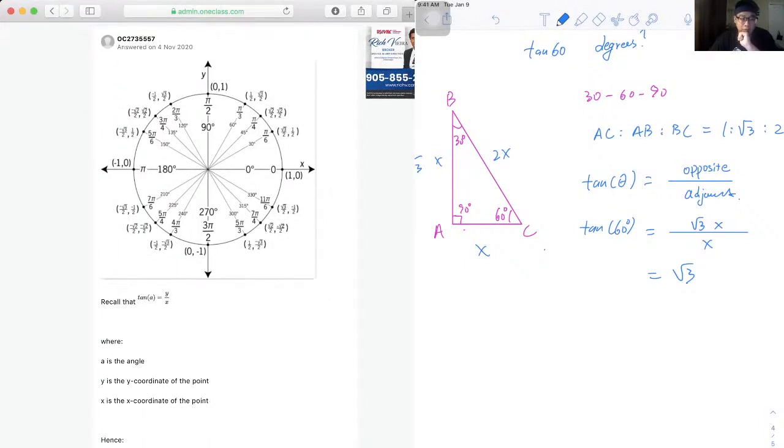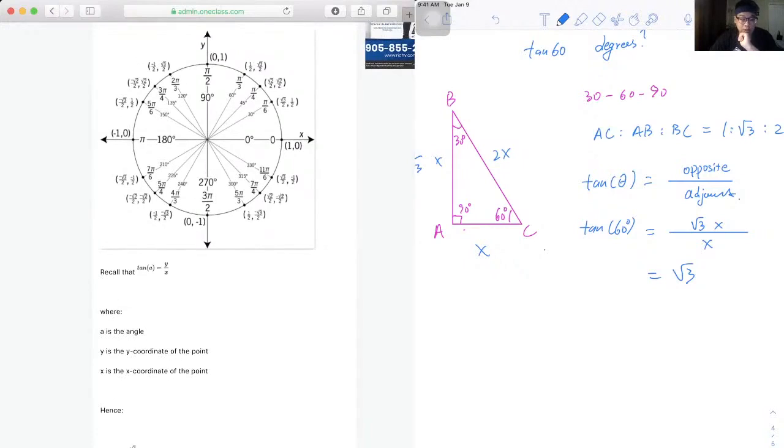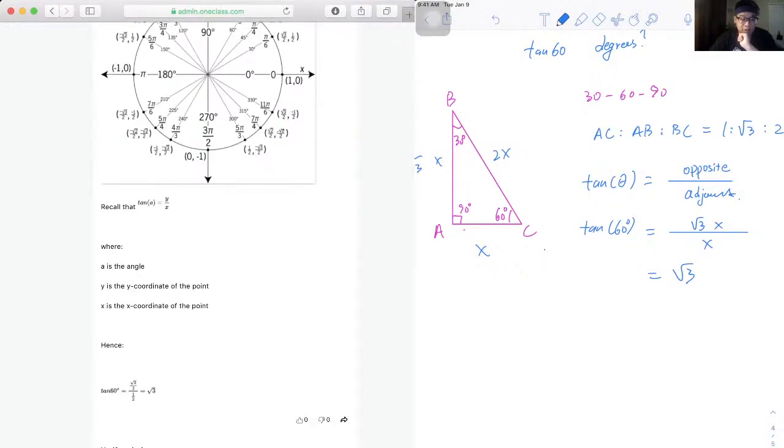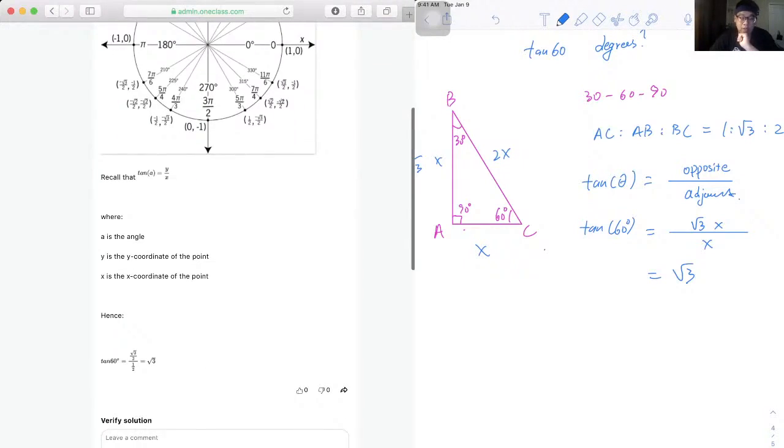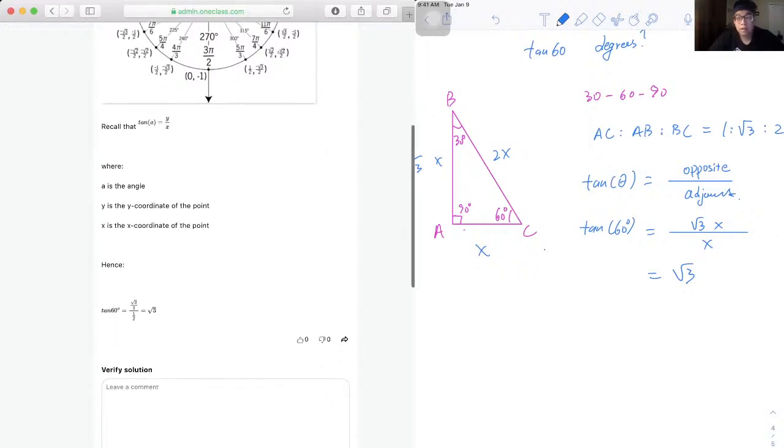We call the tangent a equal to y over x, where a is the angle. So y is the y-coordinate of the point, x is the x-coordinate of the point. According to the unit circle, that will still give us √3x over x for tangent 60.